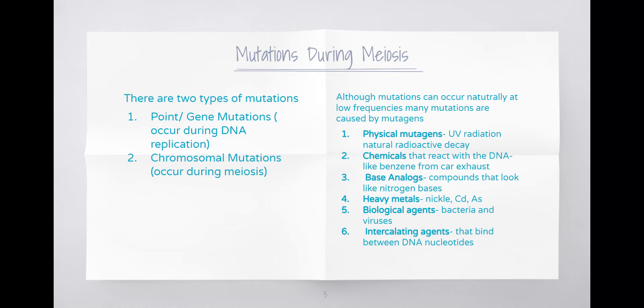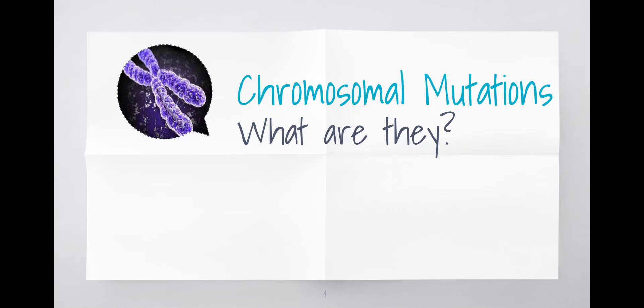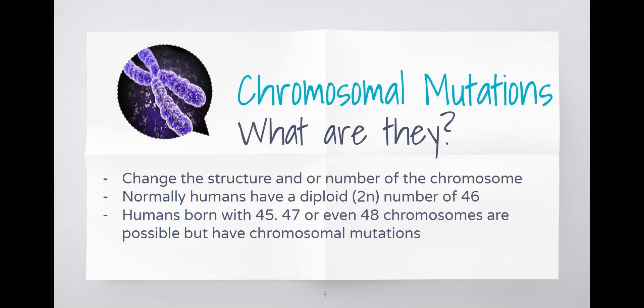What is a chromosomal mutation exactly? We've already defined what a point mutation is, so on page 16 under 'What is a chromosomal mutation?' we're going to write this down. Essentially, they are the change of a structure or the number of chromosomes. Normally you have a diploid number of 46 chromosomes in every cell in your body; however, someone who has a chromosomal mutation may have 45, 47, or even 48 chromosomes found within each cell.